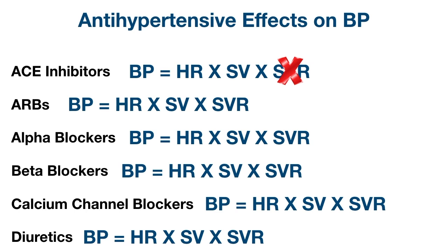ACE inhibitors will also decrease stroke volume. Angiotensin II augments sodium and water reabsorption in the kidneys and also augments the release of aldosterone and antidiuretic hormone, both of which increase sodium and water reabsorption — so you can see that will impact stroke volume.